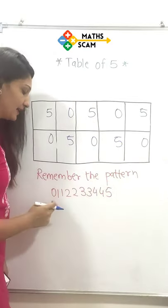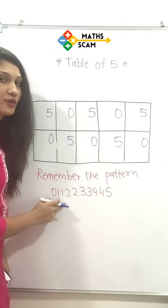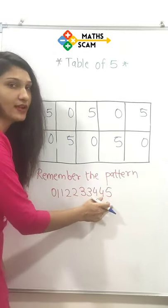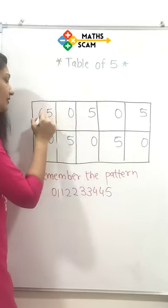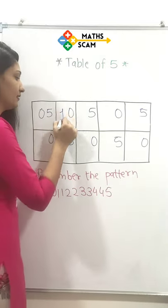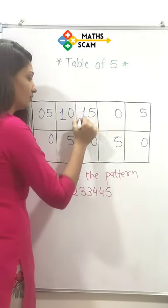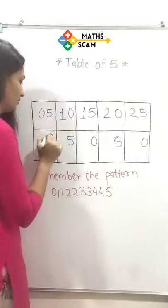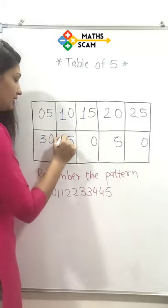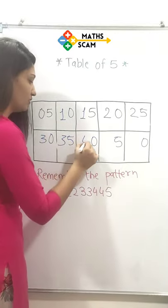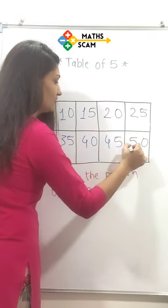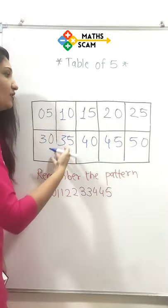Then remember this pattern: 0, 1 twice, 2 twice, 3 twice, 4 twice, and 5. So write this pattern here: 0, 1, 1, 2, 2, 3, 3, 4, 4, 5. So this is our table of 5.